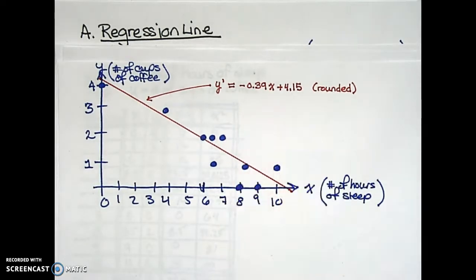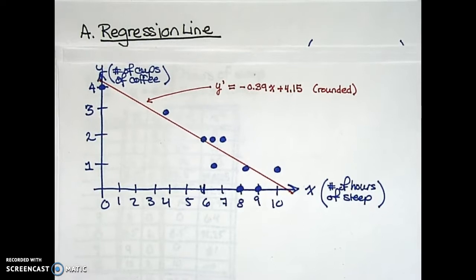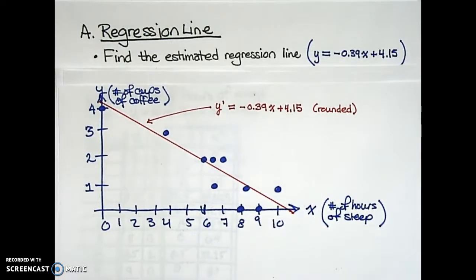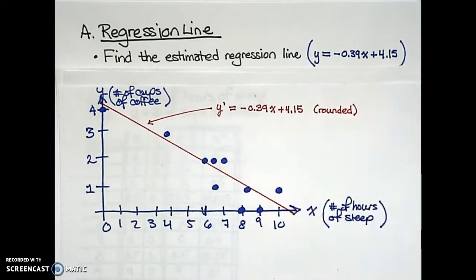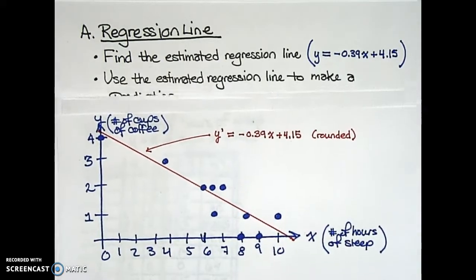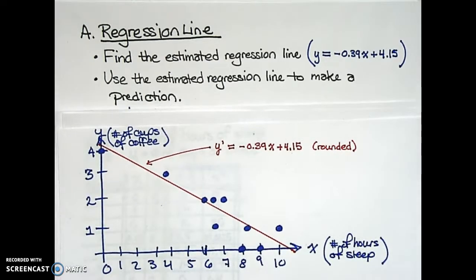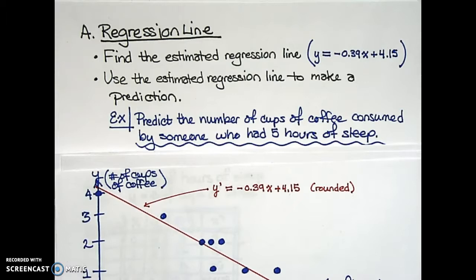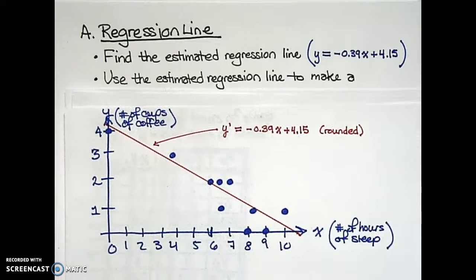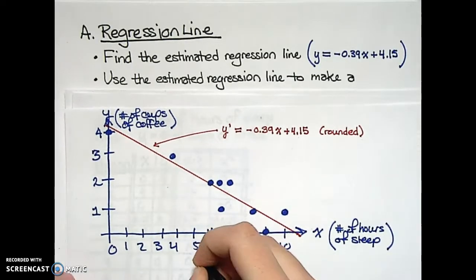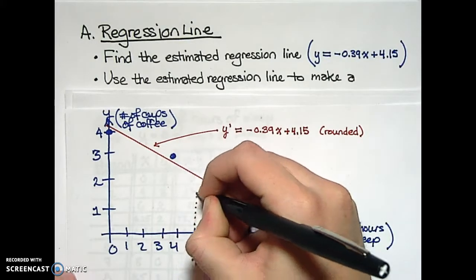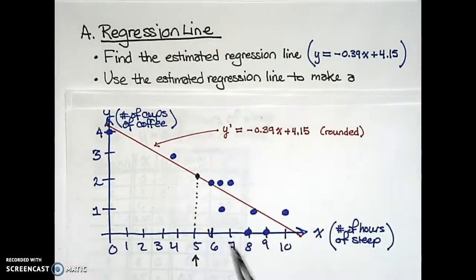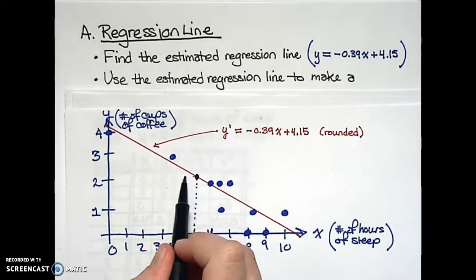This estimated regression line answered the first question: how are two quantities related? So the first thing we always do is find the estimated regression line. The next thing we can do with a regression line is use it to make a prediction. For our data set, let's predict the number of cups of coffee consumed by someone who had five hours of sleep. Looking at our scatter diagram, if someone had five hours of sleep, we can go up to our estimated regression line and trace over to the vertical axis.